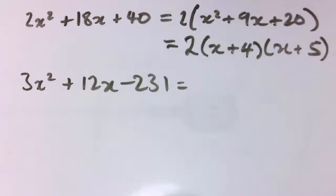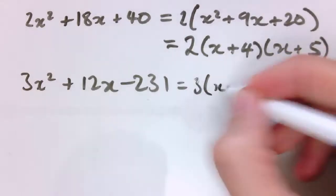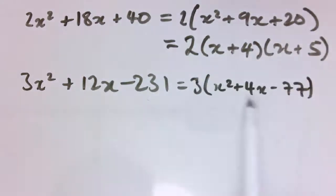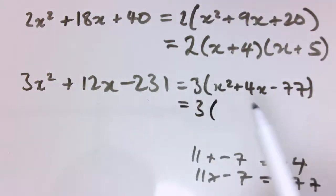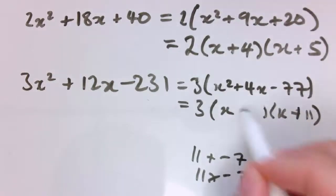Here's another one that's similar. We start by looking for a common factor. 3 looks like it might work, and you can check that it's 3 times x squared plus 4x minus 77. So now I need two numbers that times together to give minus 77 and add together to give plus 4, and what works is 11 and minus 7. So this is 3 times x plus 11 times x minus 7.